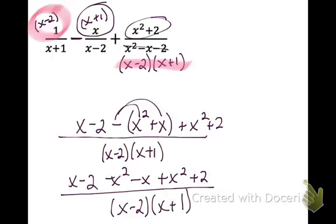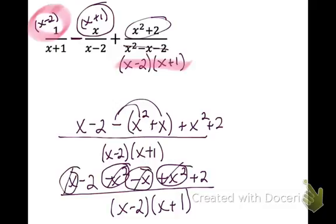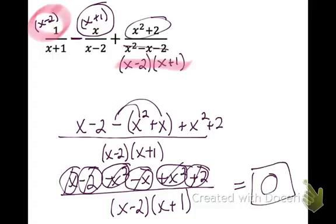Now I look for like terms to combine. The x squared terms cancel out, and the x terms also cancel out. Everything on top adds to 0, so I have 0 divided by my denominator. Zero divided by anything is just 0.